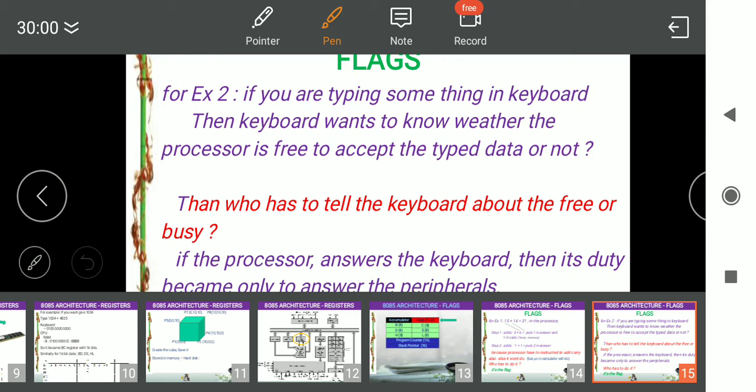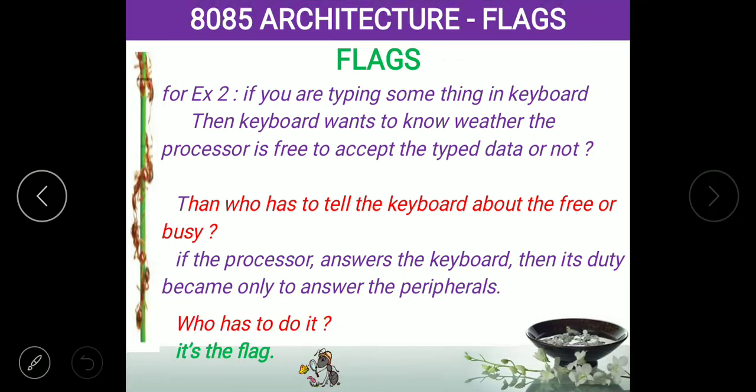That secondary element is called the flag. On a computer or laptop, near the power button there is an amber light glowing. The processor does not tell the LED to glow directly. The LED checks the flag, and based on the status of the flag the light glows. If the flag says the processor is busy, the amber light switches off. This element is called the flag element.